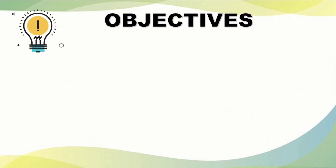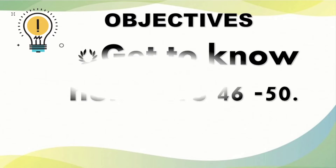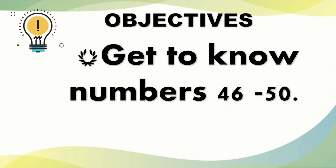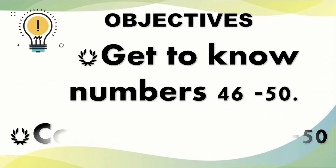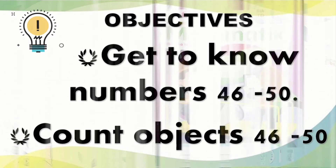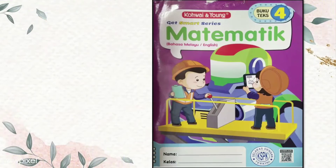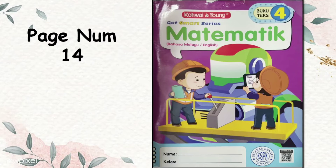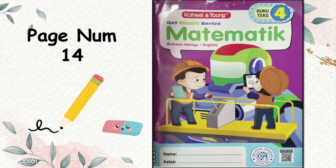The objectives of today's lesson is to get to know numbers from 46 to 50, and also to count objects from number 46 to 50. Now let's take out your textbook for Mathematics and turn to page number 14. Don't forget to grab a pencil and eraser with you.